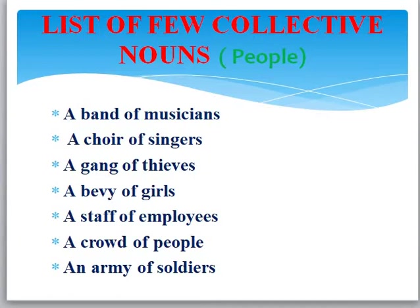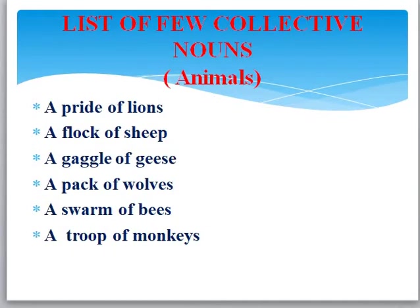You must remember which collective noun is used for which group — what kind of people, things, or animals are put together and what is the collective noun that you get. It is very important for you to learn the list of collective nouns which is given in your book. Now this is for animals — the list of collective nouns for animals.